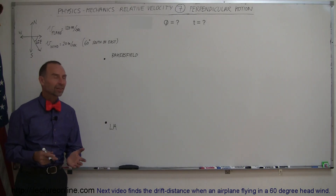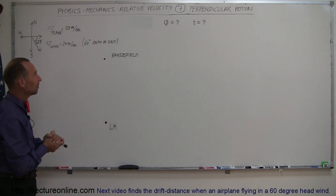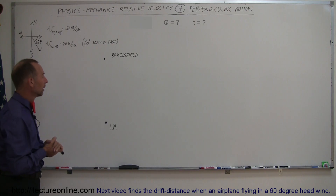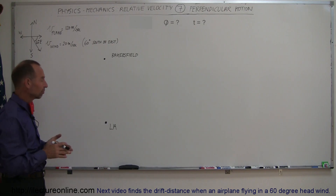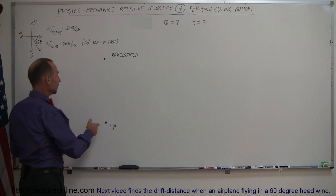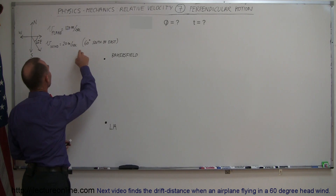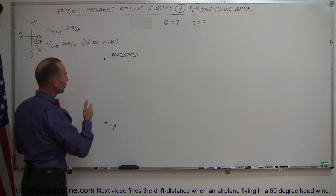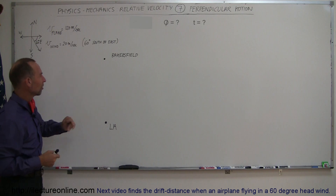Here's our next example of relative velocities. This is not linear motion — it's perpendicular motion, or more accurately, two-dimensional motion. A plane's pilot wants to fly from LA to Bakersfield with a plane that can fly 120 meters per second, and Bakersfield is directly north of Los Angeles.